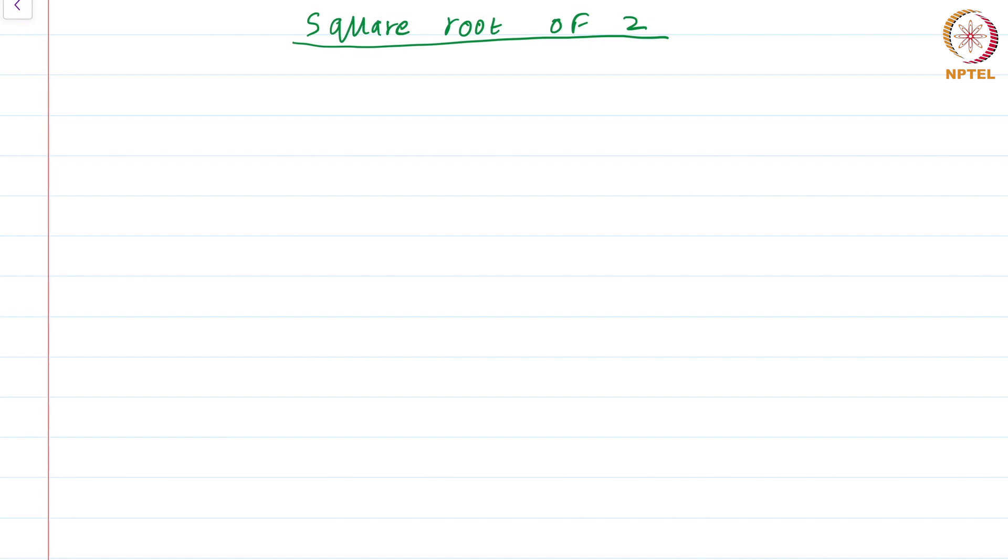First, let me make a very precise statement as to what I want to prove. Proposition: there is no rational number whose square is 2.